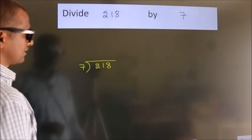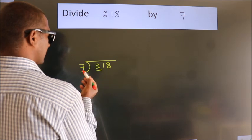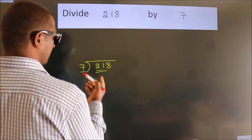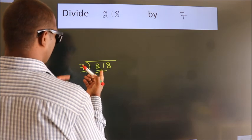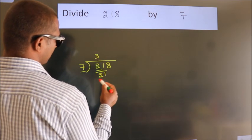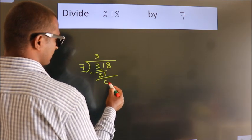Next, here we have 2. Here 7. 2 is smaller than 7, so we should take 2 numbers: 21. When do we get 21 in the 7 table? 7 threes, 21. Now we should subtract. We get 0.